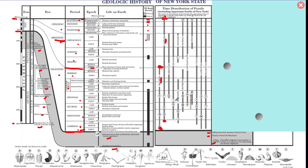The letters on the bars represent index fossils — specific species of that type of animal. For example, A, B, and C are all index fossils of trilobites. Letter A, Elliptocephala, only existed in the middle Cambrian. If you find a rock with Elliptocephala in it, you know that rock dates to the middle Cambrian, because that's the only time that organism existed.